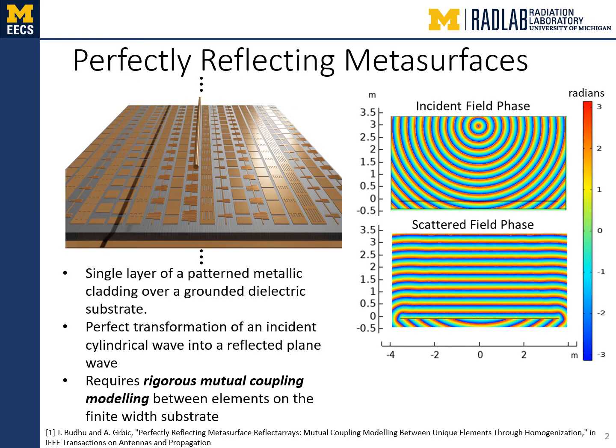We began by defining perfectly reflecting metasurfaces. Shown in the figure is a single-layer patterned metallic cladding over a grounded dielectric substrate fed by an infinite line source. The metasurface in this case is two-dimensional, and hence the geometry is invariant in the direction in and out of the page. The infinite line source radiates a perfect cylindrical wave which impinges upon the metasurface. The incident cylindrical wave is perfectly transformed into a reflected plane wave. This transformation requires rigorous mutual coupling modeling between the elements on the finite width substrate, modeled through the use of integral equations.